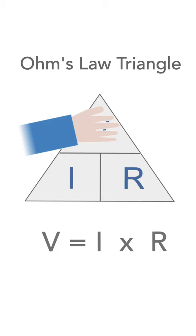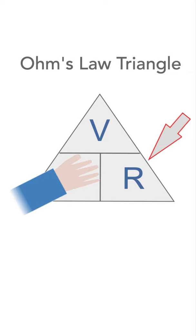They're multiplied together because they're next to each other. For I, V is at the top and R is underneath, so it's V divided by R.